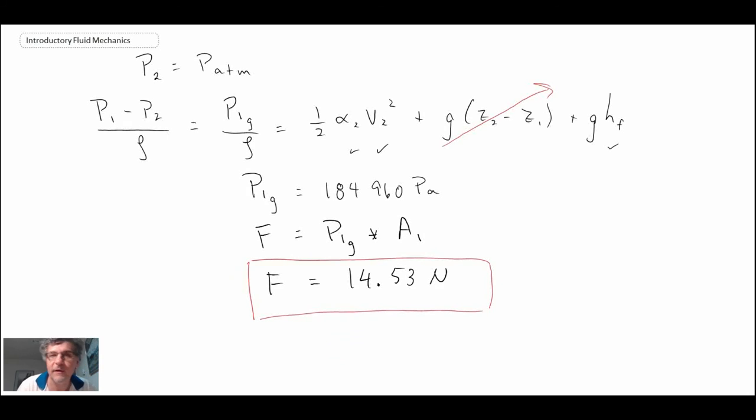This is an example of estimating pressure drop using a flow field where you have very low Reynolds number. Consequently, we had laminar flow. Then you apply the steady flow energy equation to solve it. So that is an example of friction factor for laminar flow.